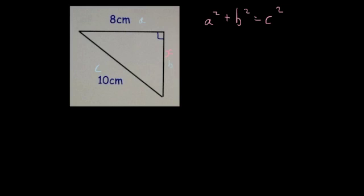So what I do is I put those numbers into the formula. So what that would give me then would be 8 squared plus 10 squared equals X squared.